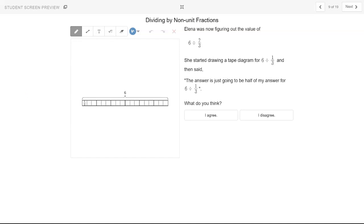Dividing by non-unit fractions. A non-unit fraction is a fraction where the numerator is not one. So for example, two-thirds is a non-unit fraction.